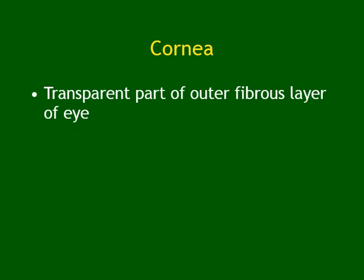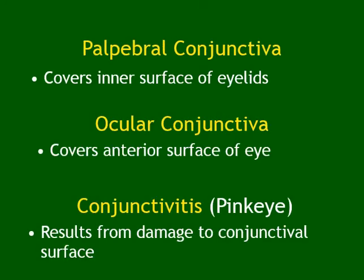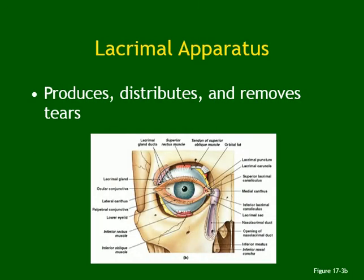Usually it dribbles very slowly in small amounts, which is why we never feel it — except if we are tearing too much. This pathway is important for both lecture and lab: lacrimal gland → lacrimal ducts → eye → puncti → canaliculi → lacrimal sac → nasolacrimal duct → inferior concha. The lacrimal apparatus functions to produce, distribute, and remove tears.